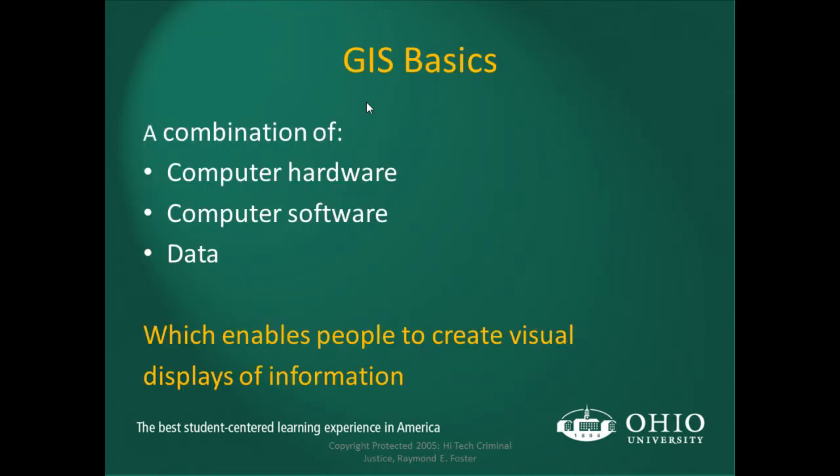GIS basics. GIS is a combination of multiple things: computer hardware, computer software, and data. Most people interface with a geographic information system through a desktop or laptop computer running a particular type of software, whether it be a web-based interface. But the biggest component of a GIS system is the data itself — the geographic data encompassed in that system.